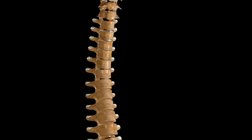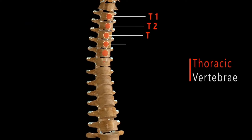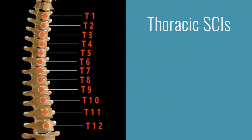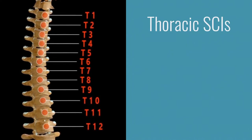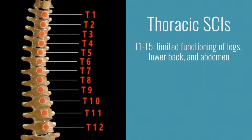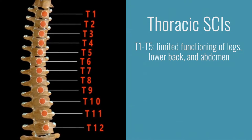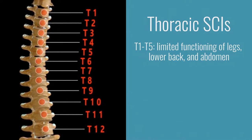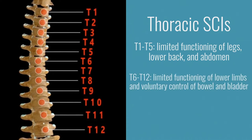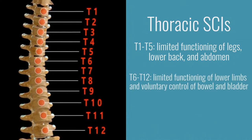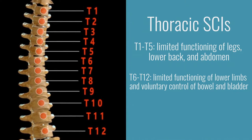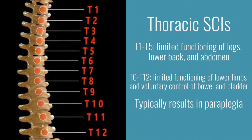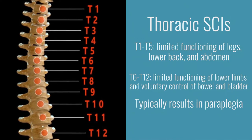The thoracic vertebrae refer to the next 12 vertebrae in the upper and middle area of the back. Thoracic SCIs vary greatly depending on the specific location of the injury. An injury in the T1 to T5 region will limit functioning of the legs, lower back, and abdomen. Injuries in the T6 to T12 region will reduce bowel and bladder control and lower limb functioning. Individuals with thoracic SCIs will typically be paraplegic, meaning only their legs are paralyzed.